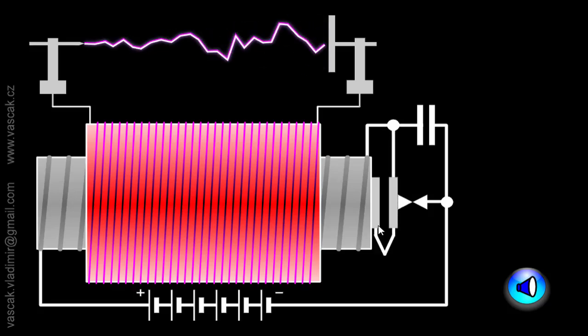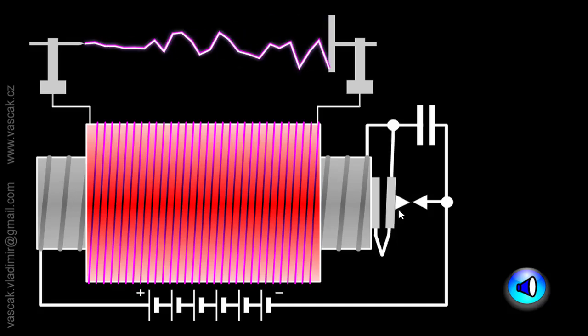Now to generate the alternating current in the secondary coil, we have to change the magnetic field in the primary. Now here this inner coil is the primary winding.